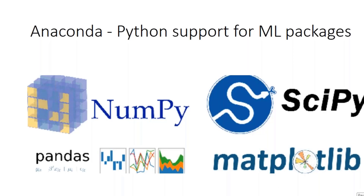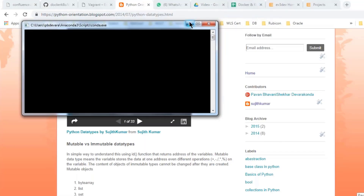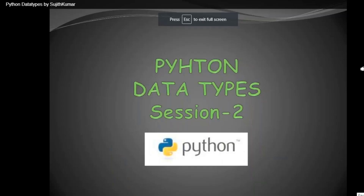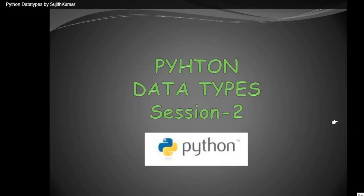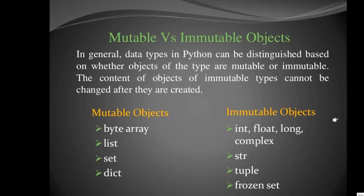Today our topic is to understand Python data types. When I launch Anaconda, it keeps popping up multiple command windows, and after that it works. Let's go through data types in Python. There are two types of Python variables: one is mutable, and the second one is immutable.